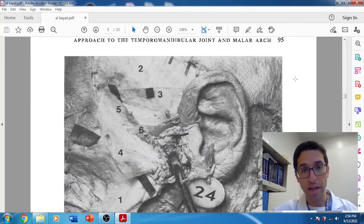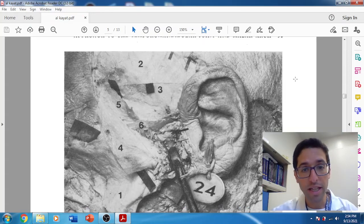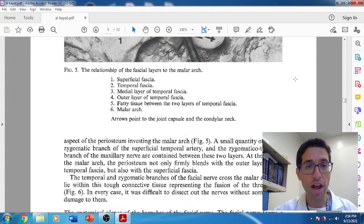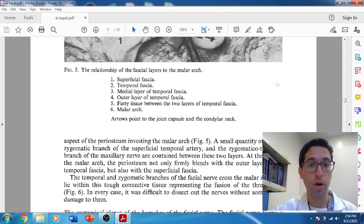He also talks about, based on this, what he would recommend as his approach, based on these numbers. So this is why, this is the Al-Kayat incision that's often referenced. And he talks about the different fascial layers. And this is really instrumental to any time you do a preauricular approach, whether it's endoral or just preauricular, which I think between those two, that's what most people use.